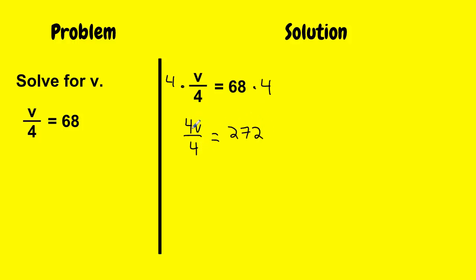And when I simplify my left side of my equation, I get 1v equals 272. And if I simplify one more time, we would normally write 1v as just v equals 272.